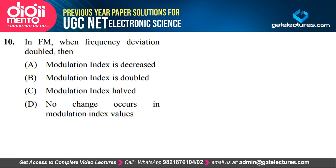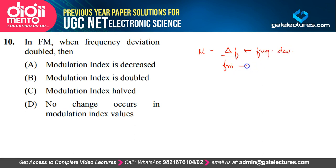In FM, when frequency deviation is doubled, what happens to the modulation index? The modulation index in FM is delta F divided by Fm, where delta F is frequency deviation and Fm is modulation frequency. When you double the frequency deviation — that is, if delta F doubles — the modulation index is also going to be doubled, provided that the modulation frequency does not change. So modulation index gets doubled.